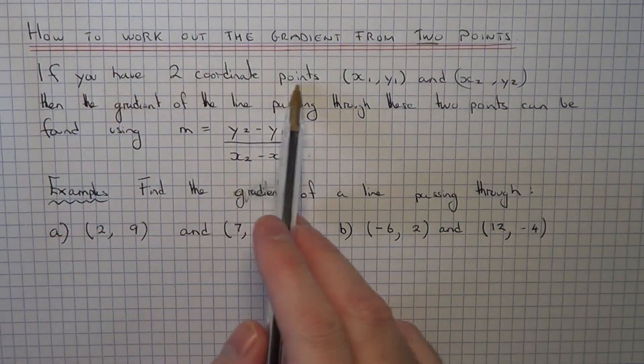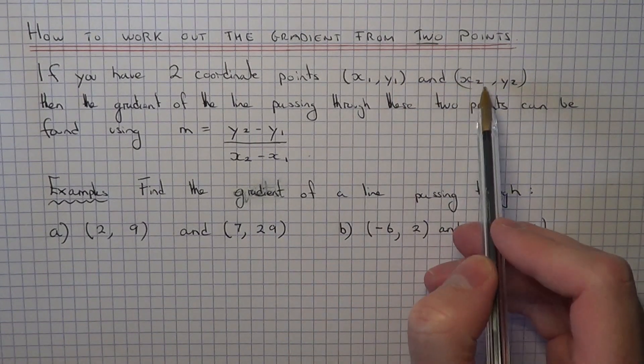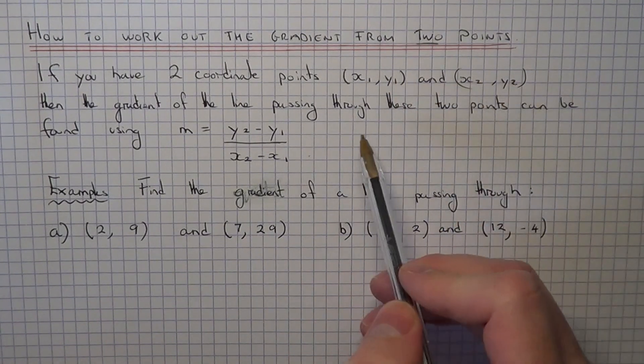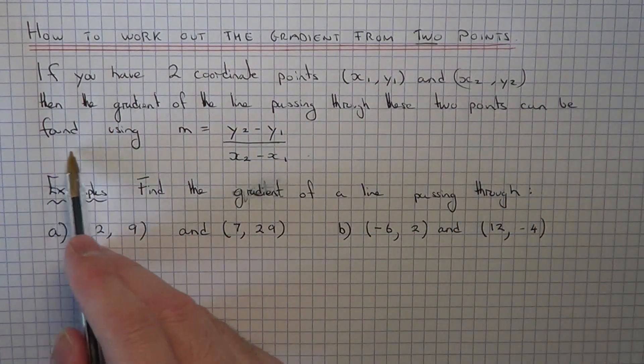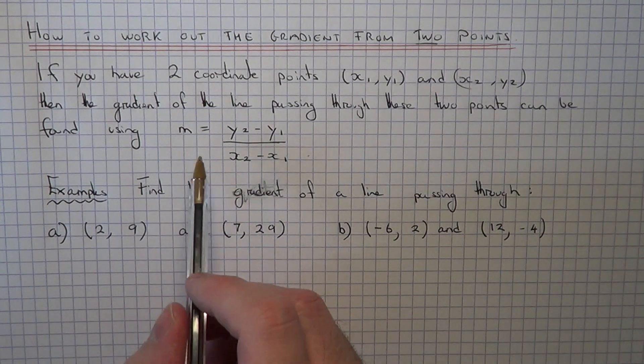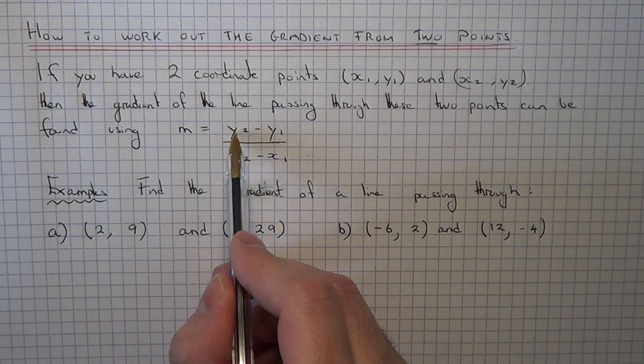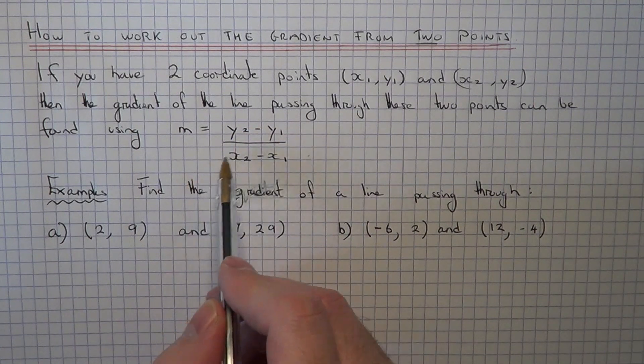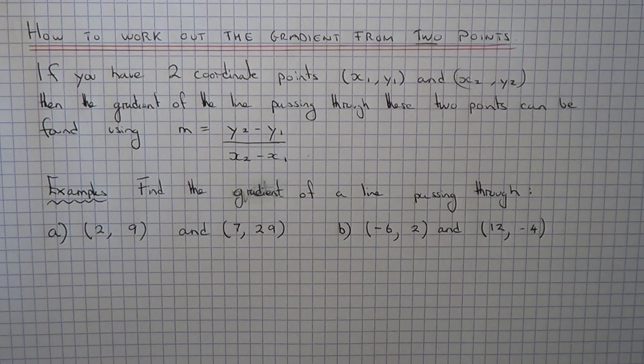If you have two coordinate points, let's call the two points x1, y1 and the other coordinate point x2, y2. The gradient of the line passing through these two points can be found using this formula. So m stands for the gradient, on the top you've got y2 minus y1 and on the bottom of the fraction you've got x2 minus x1.